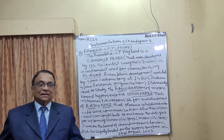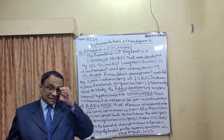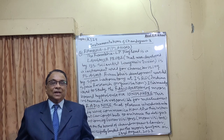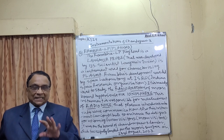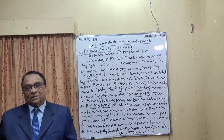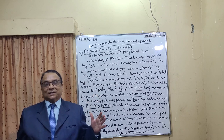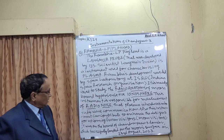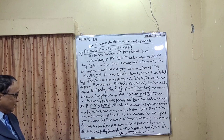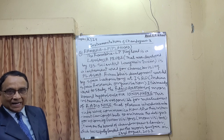Chandrayaan-3's Vikram lander and Pragyan rover did their research on the surface of the moon and found sulfur, oxygen, titanium, manganese, chromium, and iron — all these elements were discovered with the help of spectral studies and instrumentation. The Pragyan rover was on board Chandrayaan-3, which successfully landed on the moon's surface on 23rd August 2023.